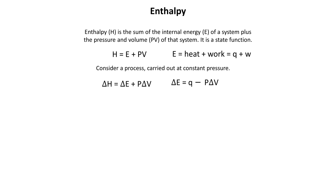We can rearrange our equation for internal energy such that it's set equal to Q. When we do that, you'll notice that both delta H and Q are equal to the same thing — delta E plus P delta V — which means that delta H equals Q, or enthalpy equals heat at constant pressure.